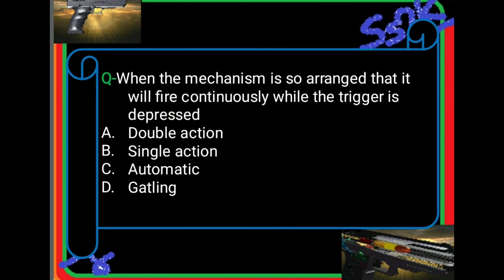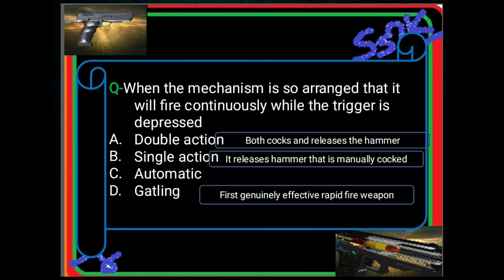Double action is usually used in revolvers, but now there are also pistols that are double action. When we say double action, if you press the trigger it will both cock and release the hammer. So one trigger pull — the hammer is cocked and released. For double action pistols, when you pull the trigger, the slide automatically goes back, loads a round into the chamber, and automatically releases.